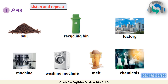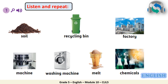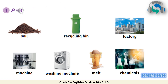Let's now listen and repeat. CLIL 5, Modules 9 to 10, Social Studies and Science. Vocabulary: Soil. Recycling Bin. Factory. Machine. Washing Machine. Melt. Chemicals.